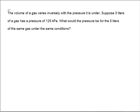It says the volume of a gas varies inversely with the pressure it is under. So we have volume varying inversely with pressure. So we're going to look at the product of volume and pressure. The volume of 3 liters happens to have a pressure of 125 kilopascals.